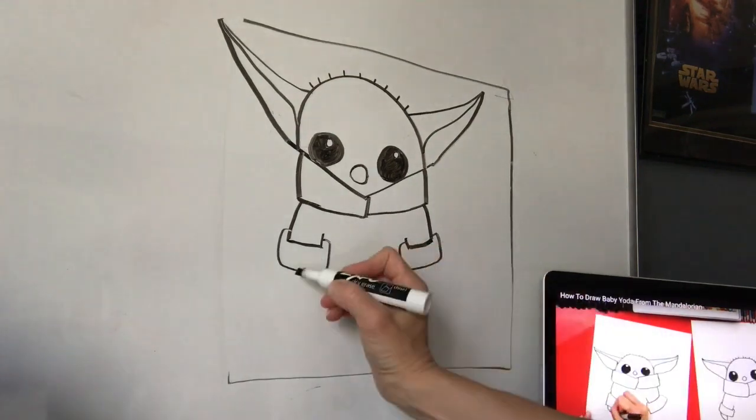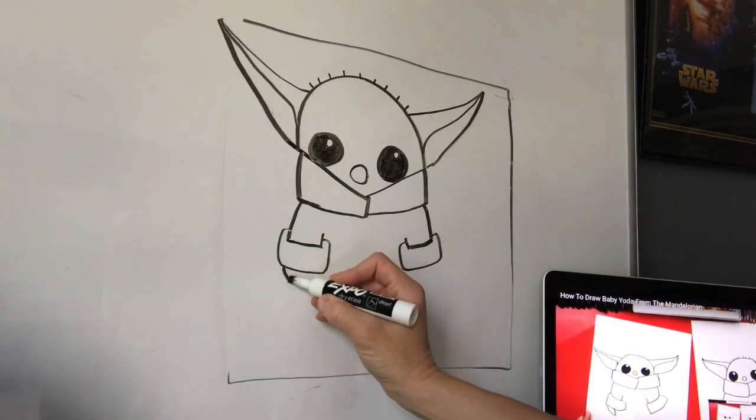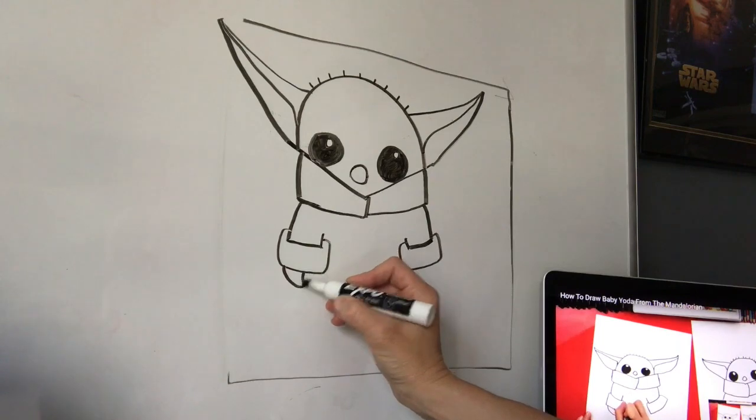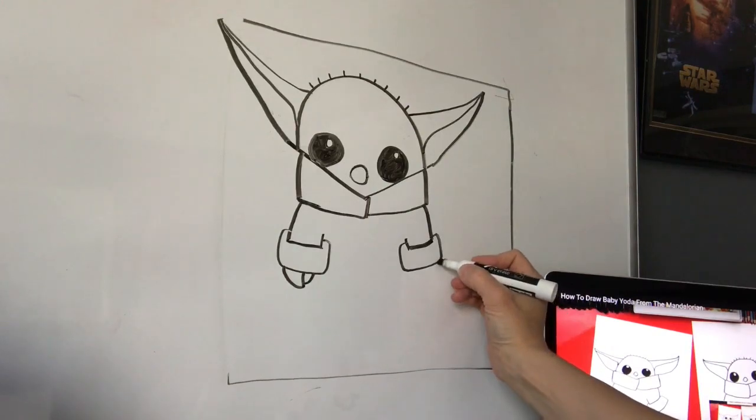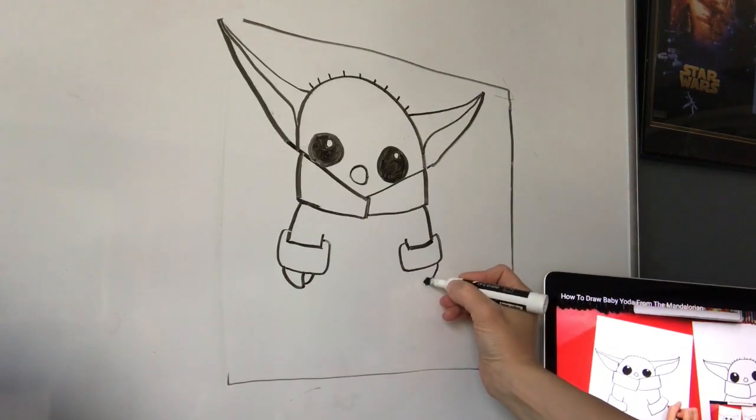All right. Now we're gonna make his part of his hands. And he only has three fingers. So we just go in like this. And then we're making a little shape like that. Just curve it down and back up.